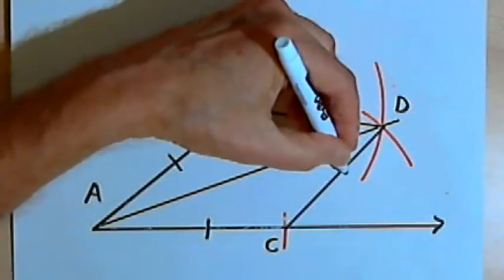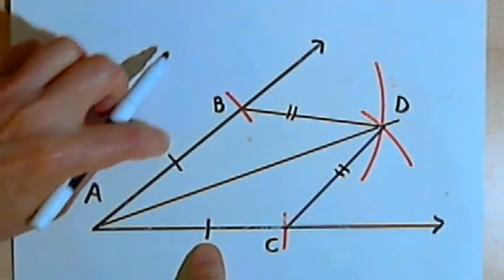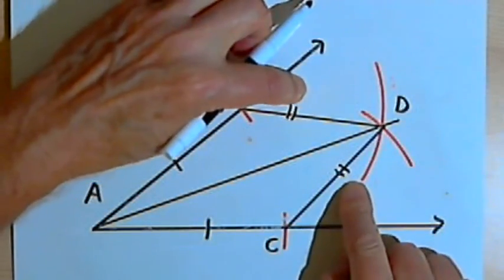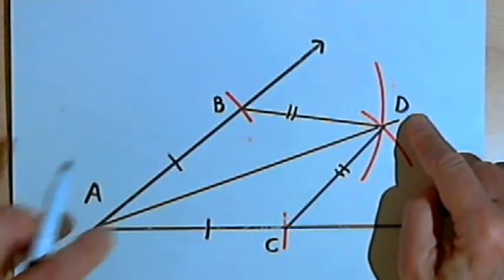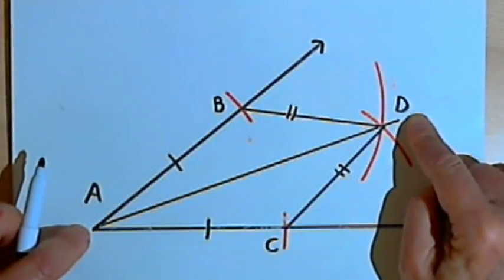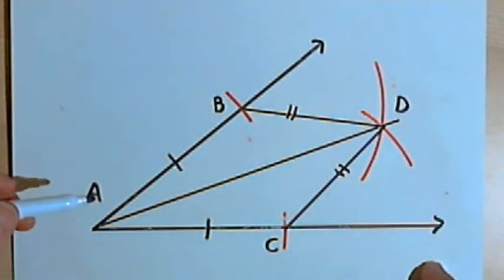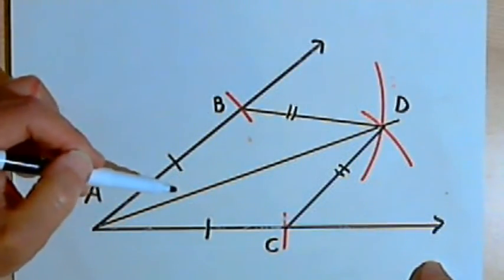So I've got AB equal to AC, BD equal to CD, and I've got two triangles which share a common edge line segment AD. So those two triangles must be congruent by side-side-side congruity.